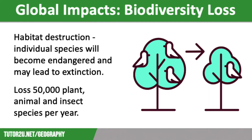Our second major global impact is biodiversity loss. Deforestation means a loss of habitat for many animals in the tropical rainforest biome. This threatens individual species with them becoming endangered and then possibly becoming extinct. Current estimates suggest that 137 plant, animal and insect species are lost every single day because of deforestation — around 50,000 species a year.